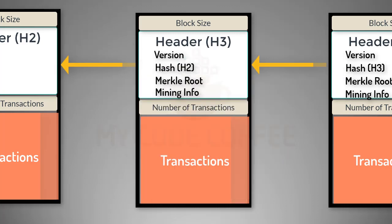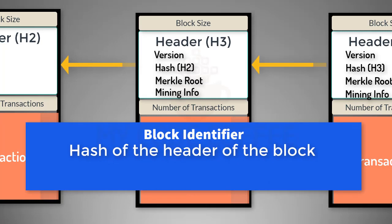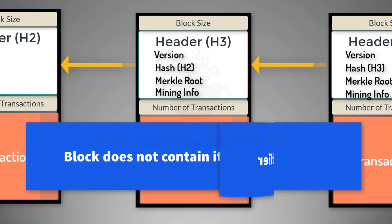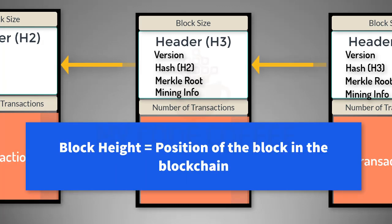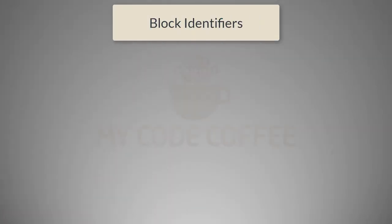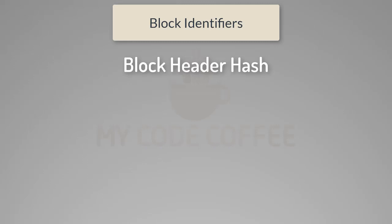The hash of the header of any block is also called the block identifier because it uniquely identifies the block. Ironically, a block does not contain its own identifier, though it does contain the identifier of the previous block. These block identifiers, which are hashes of the header, are often stored separately for indexing and searching of blocks. There is one more way of identifying a block apart from the hash of its header, and that is block height — the position of the block in the blockchain. The genesis block, which is the first block in the Bitcoin blockchain, is considered to be at position zero. So there are two types of block identifiers: block header hash and block height.